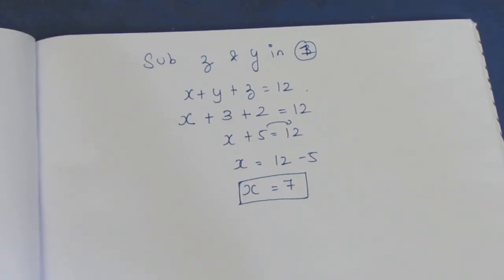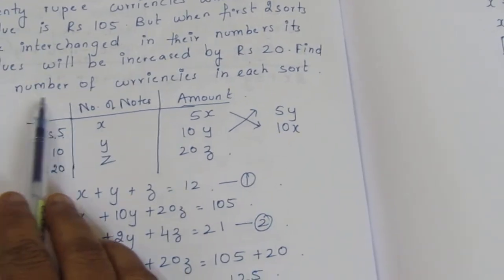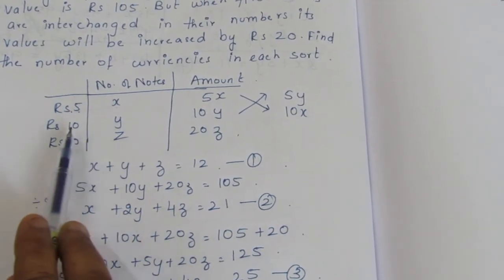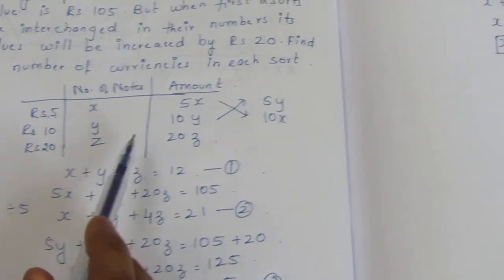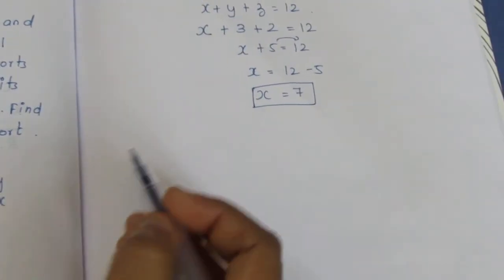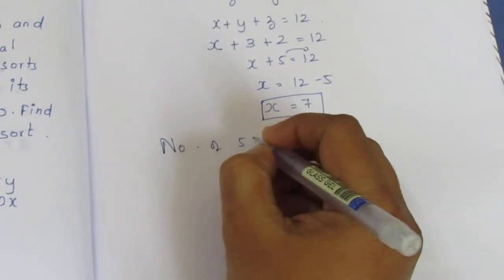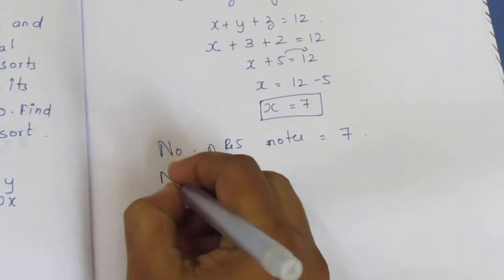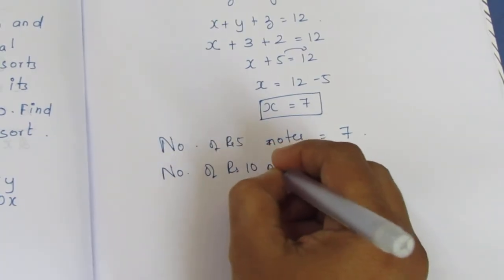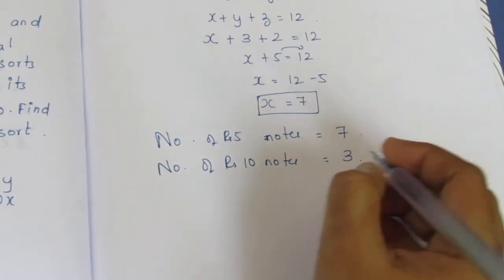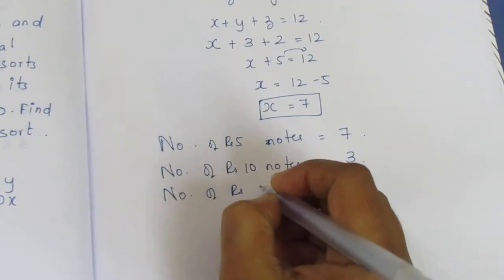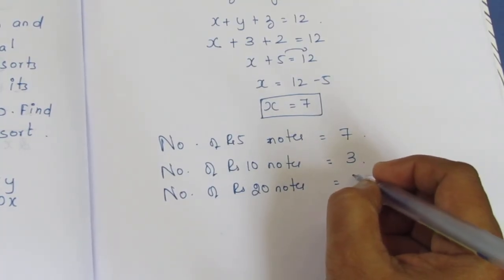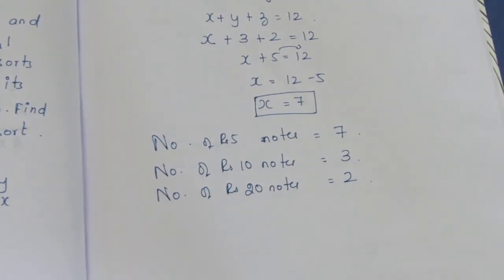So we have found x, y, and z. The number of currencies: x equals 7, so the number of rupees 5 notes is 7. y equals 3, so the number of rupees 10 notes is 3. z equals 2, so the number of rupees 20 notes is 2. This is the final answer.